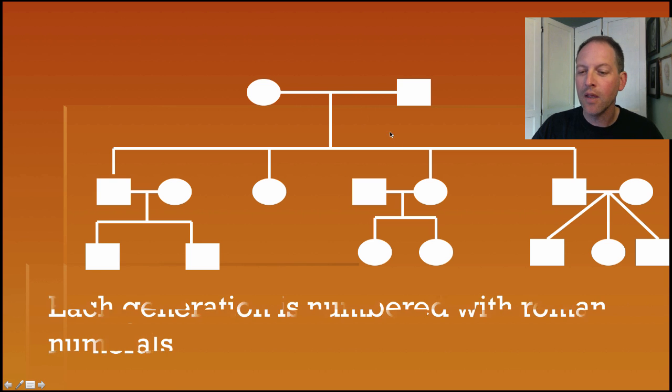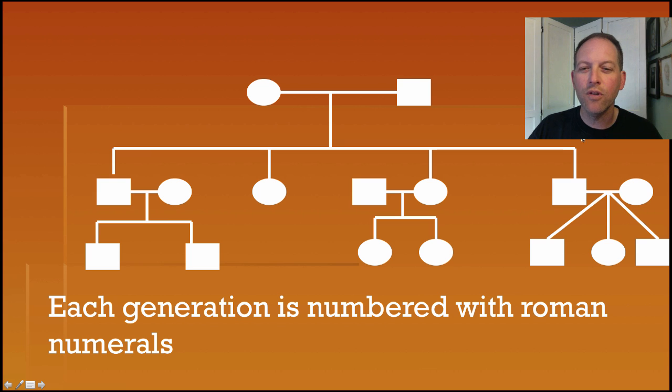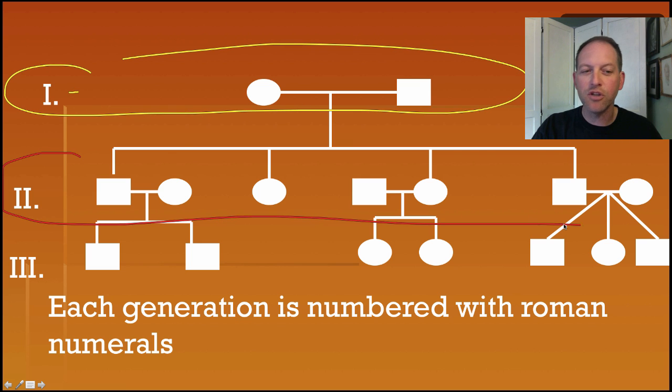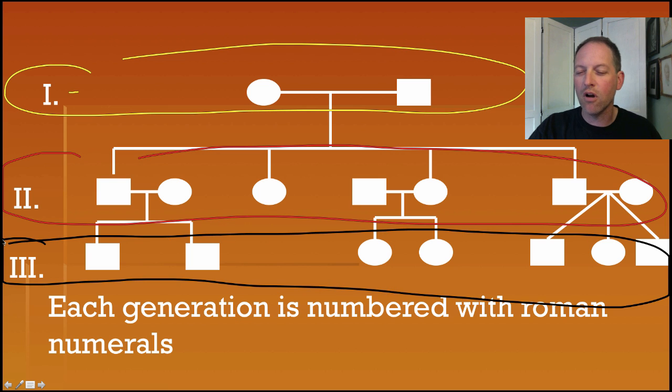Now, on your sheet here, I provided for you this pedigree, so you shouldn't have to draw it. We have a way in which we can number these people. We start by each generation getting a Roman numeral. So, this is generation one. And then this would be generation two. And then down here, this is all generation three.